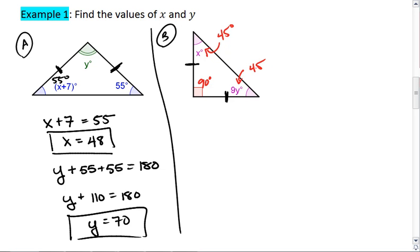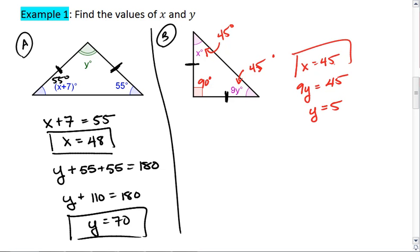And if those angles are congruent, that means each of them must be 45 degrees. So x is in fact 45; we can set 9y equal to 45, meaning that y equals 5. And that is my answer for the second triangle.